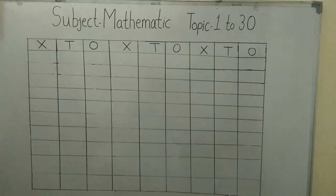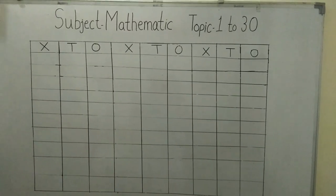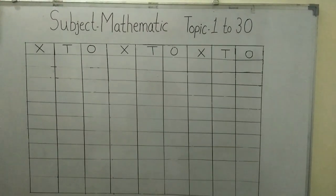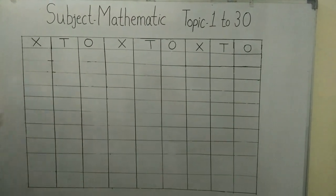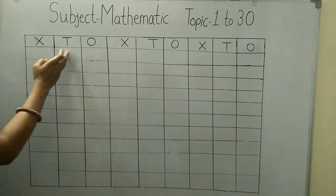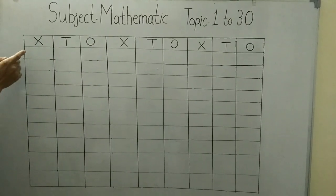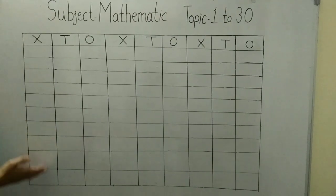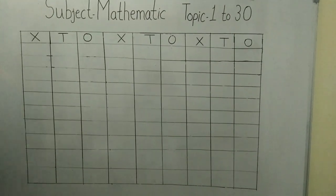Hello children, in XTO format we will learn counting from 1 to 30. O means 1, T means 10, and this is cross. Don't write any number in this slide. Let's start.